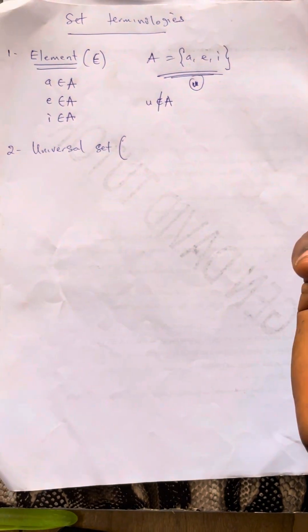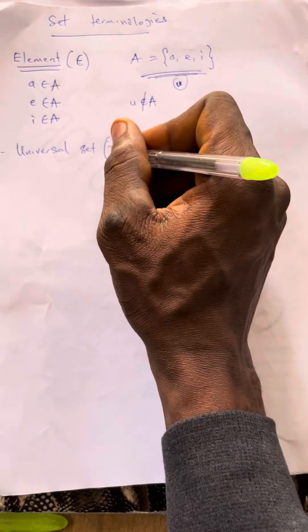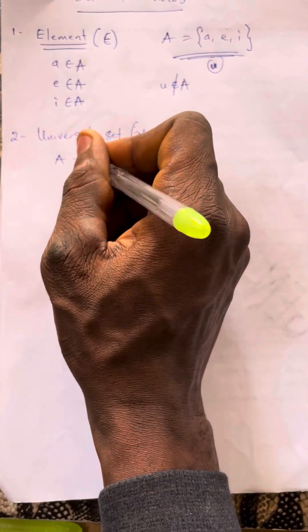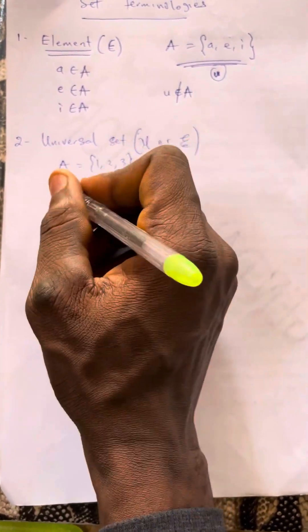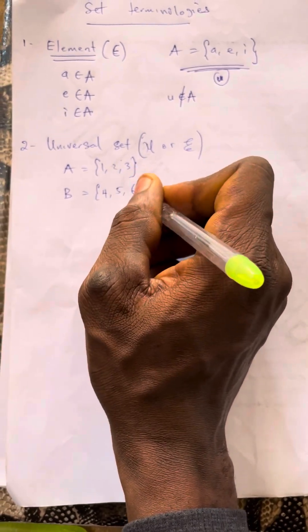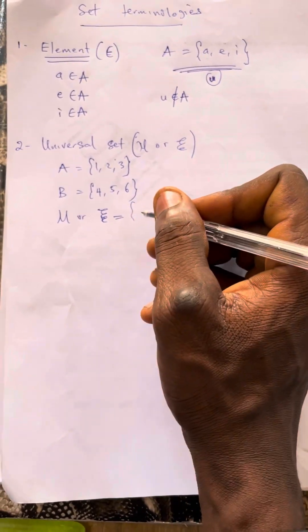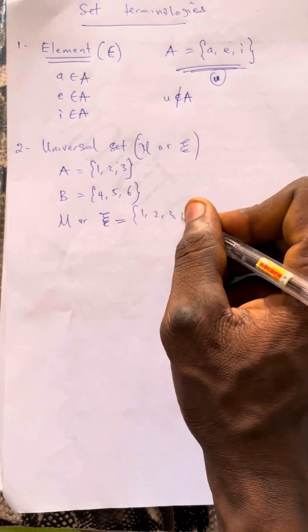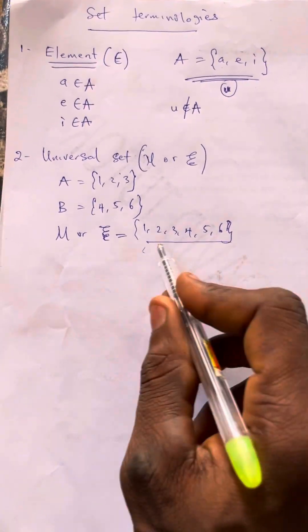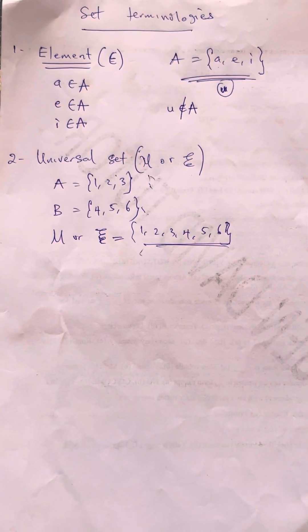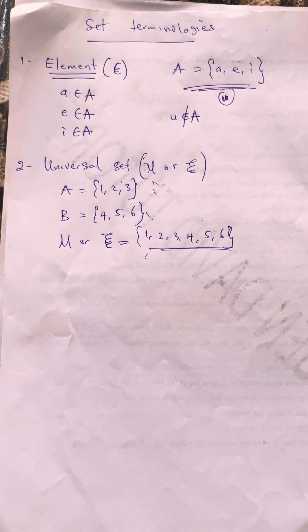The notion of universal set is represented with a special symbol. Universal set is the set that encloses all subsets. For example, if set A is {1, 2, 3} and set B is {4, 5, 6}, then the universal set is equal to the combination of all the subsets: {1, 2, 3, 4, 5, 6}. This universal set consists of these subsets, and that is what we know as the universal set.